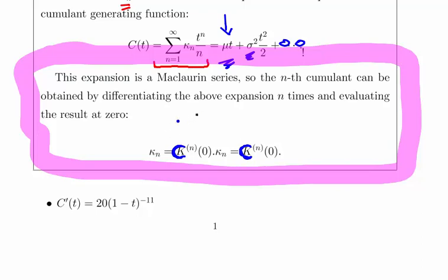Essentially what we have to do is find the first cumulant by getting the derivative of the cumulant with respect to t and then evaluating it at t equal to 0. And likewise, to find the variance, we do the same thing. We just get the second derivative and evaluate it at 0.